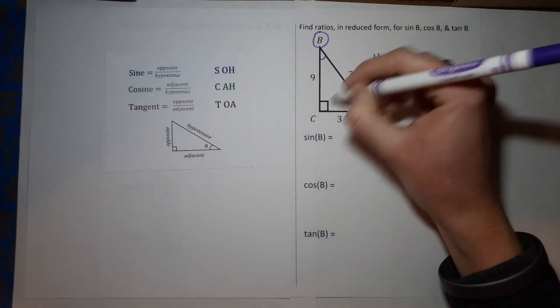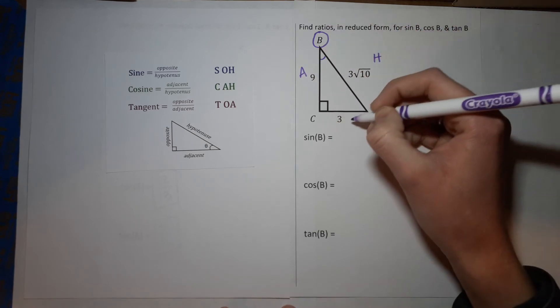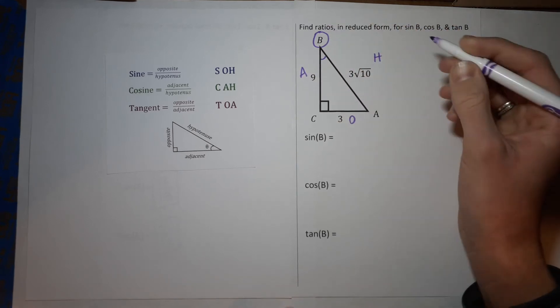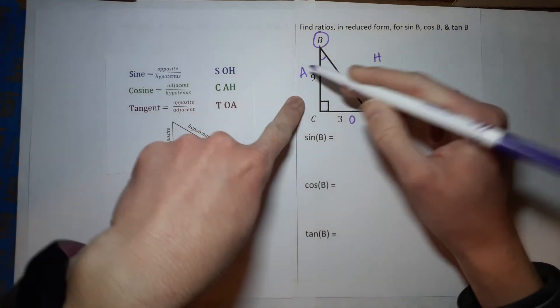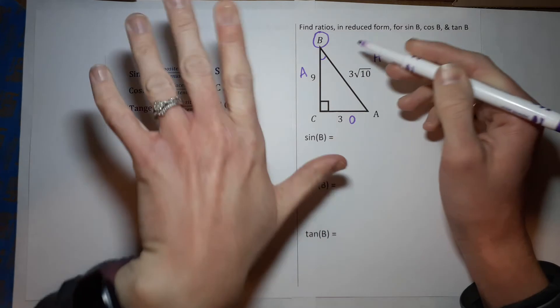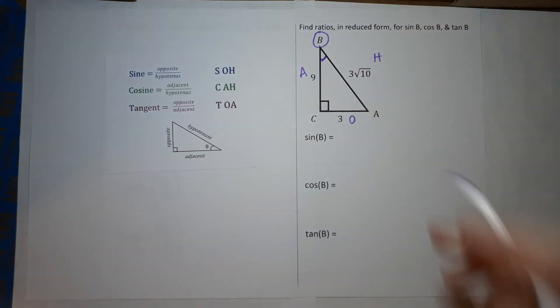Mark it somehow to help you remember, and then I like to label the sides. This is my hypotenuse, it's across from the right angle. This is adjacent to that B, and this is opposite. Just keep in mind, if we were doing A, this would be opposite and this would be adjacent. That's why it's important to know which angle you're working with. We're working with angle B.